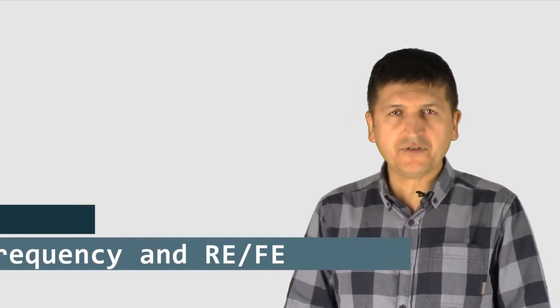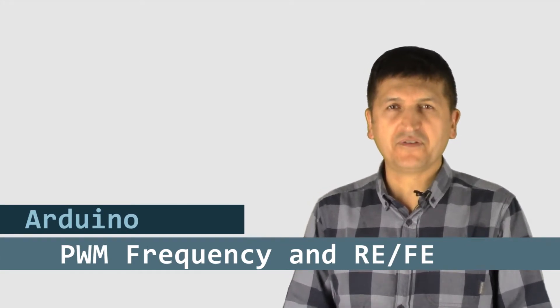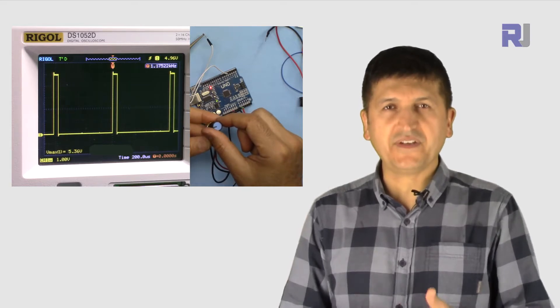Hi, welcome to an Arduino tutorial from Robojax. In this video we are going to find out the frequency of the pulse width modulation output from Arduino. We're going to use an oscilloscope to measure the frequency, and I'm going to show you the rising time and falling time of a signal.